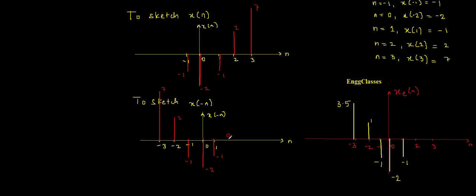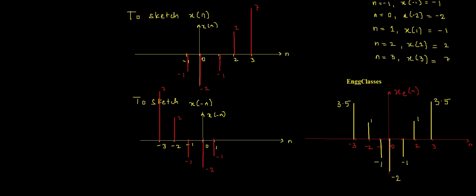At position 2, x(n) is 2 and x(-n) has nothing; 2 plus 0 divided by 2 gives 1. At position 3, x(n) is 7 and x(-n) has nothing; 7 divided by 2 gives 3.5. This is how the even part xe(n) looks. It is symmetric about the vertical axis — the values on the negative side mirror those on the positive side. The last task is to sketch the odd part.